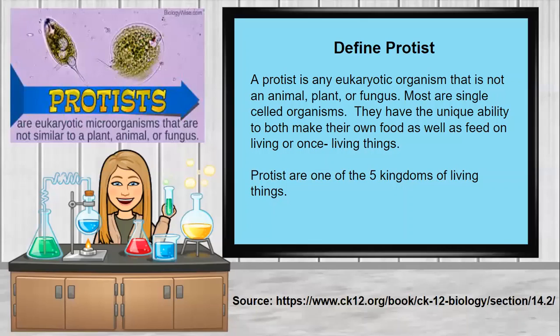To start, we're going to begin by defining what is a protist. A protist is any eukaryotic organism that is not an animal, plant, or a fungus. Most are single-celled organisms. They have the unique ability to both make their own food as well as feed on living or once living things. Protists are one of the five kingdoms of living things. Often you have to use a microscope to see them because they are single-celled. However, there are some that are a bit bigger that you are able to see, and we'll talk about those as we work our way through.